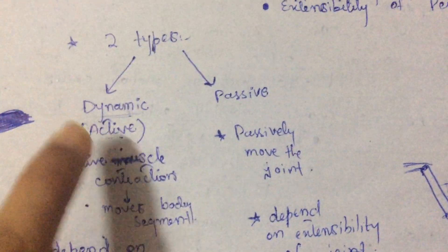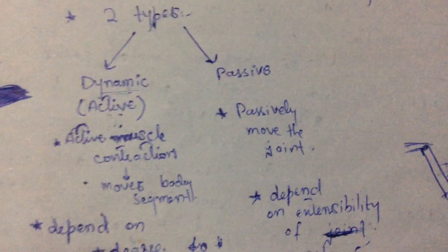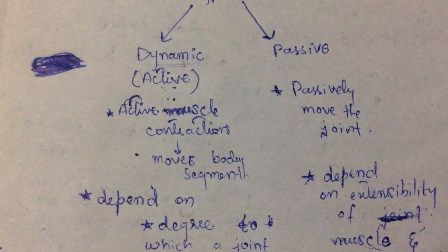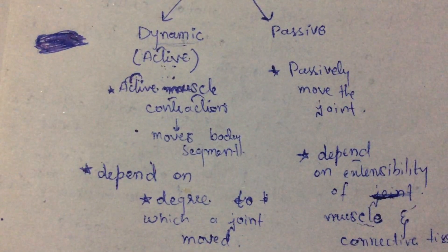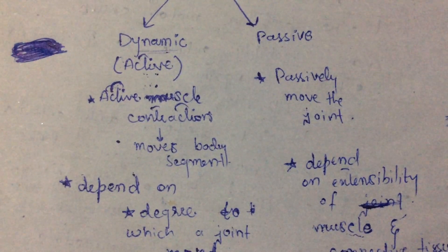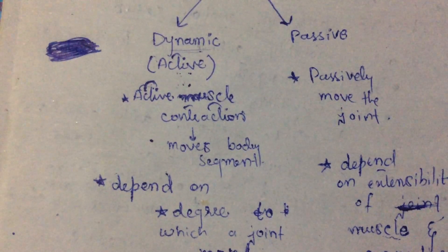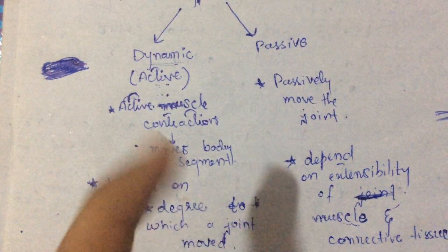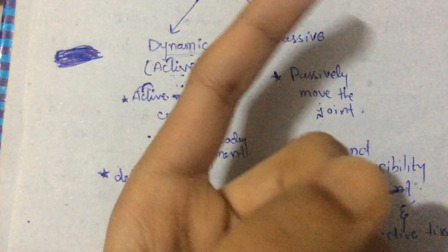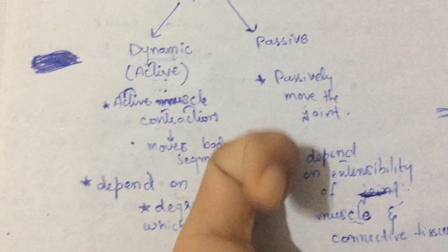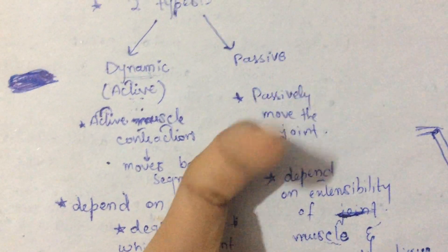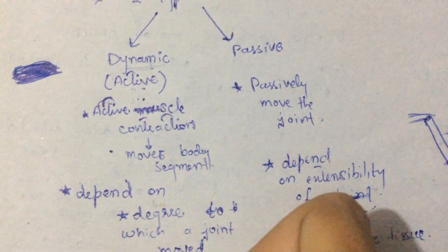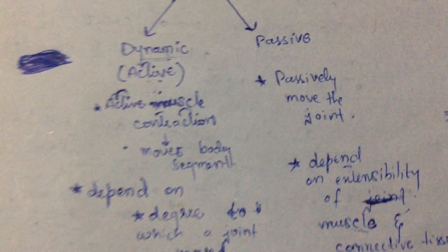Dynamic flexibility is also known as active flexibility. It is referred to as active mobility or active range of motion (ROM). It is the degree to which active muscle contractions move a body segment through the available range of motion of a joint. When a muscle actively contracts and moves a body segment through the available ROM, this is called active or dynamic flexibility.